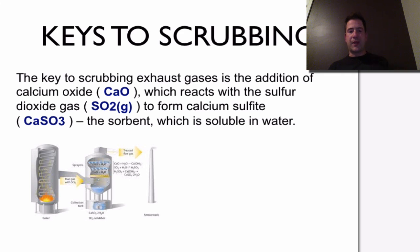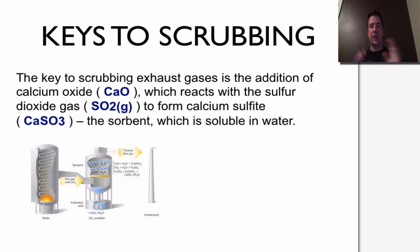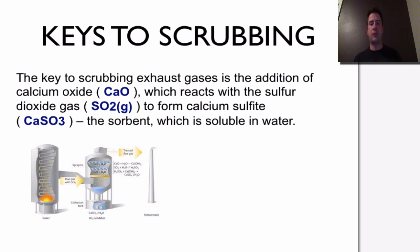The key to scrubbing exhaust gases — and this is quite important to understand — is the addition of calcium oxide, CaO. What we're going to do is add that calcium oxide, and it can react with the sulfur dioxide gas.